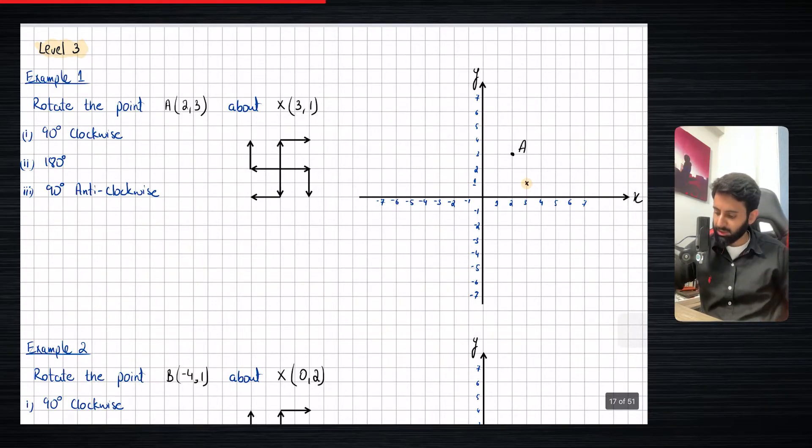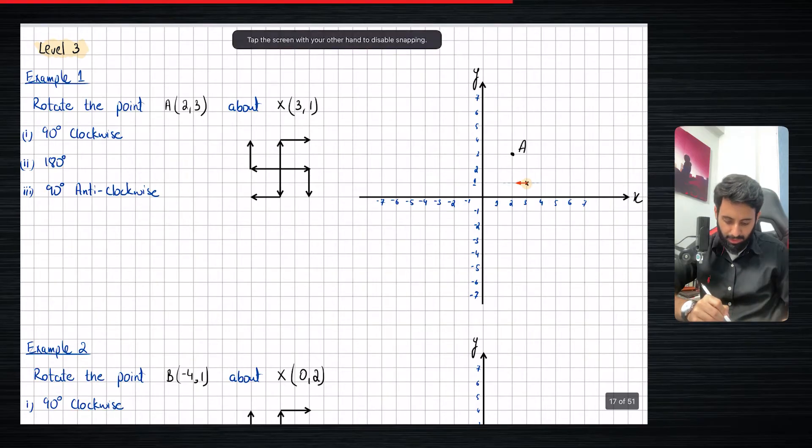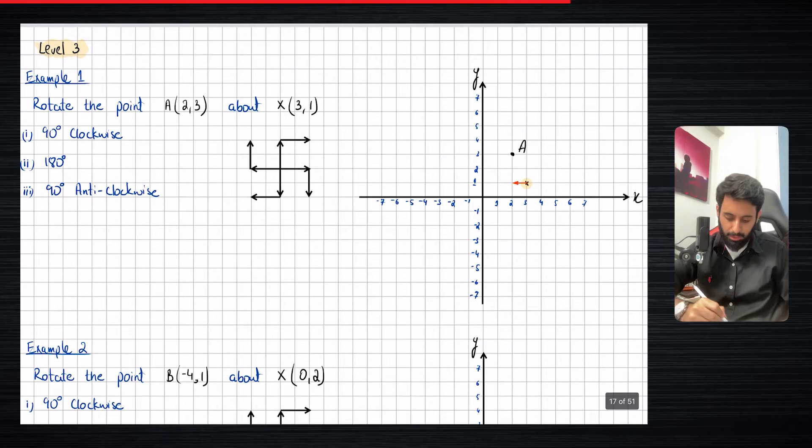So let's see the question that says rotate the point A(2,3) about x(3,1). So you can clearly see that the center is no more the origin, it is in fact, this point x over here and 90 degree clockwise in the first part. So first things first, I am going to carefully see how many units do I have to move and also in which direction in order to get to A. So you can see that I have to move one unit to the left and two units up.